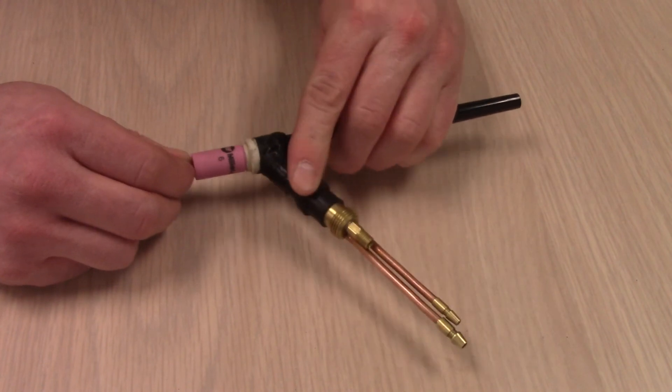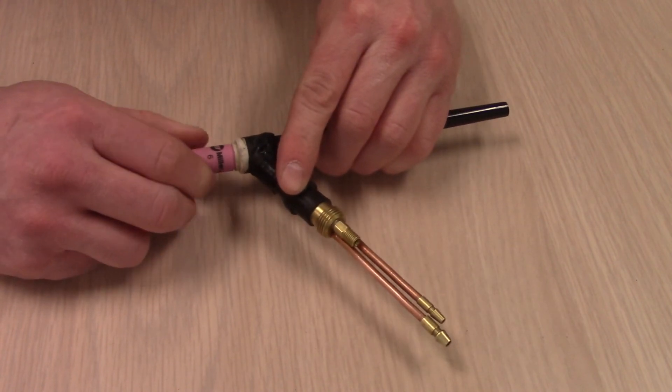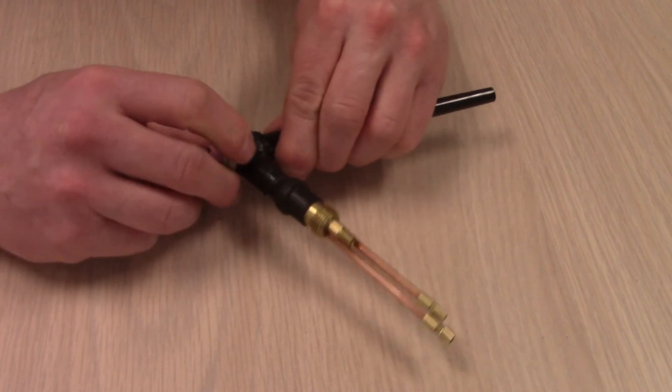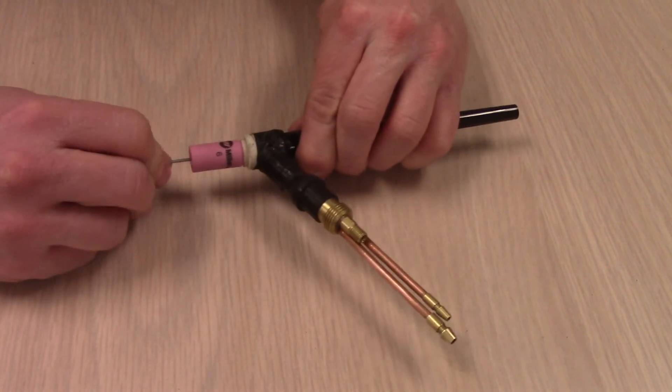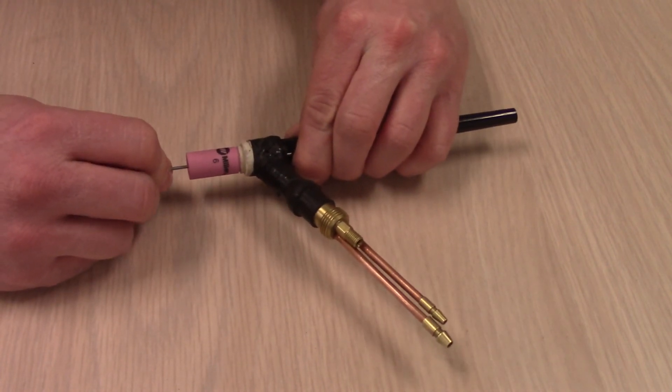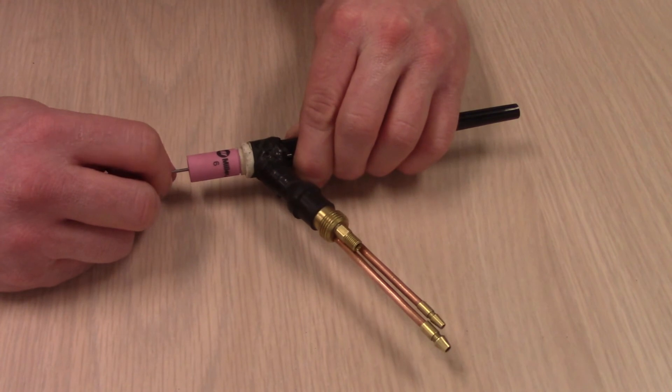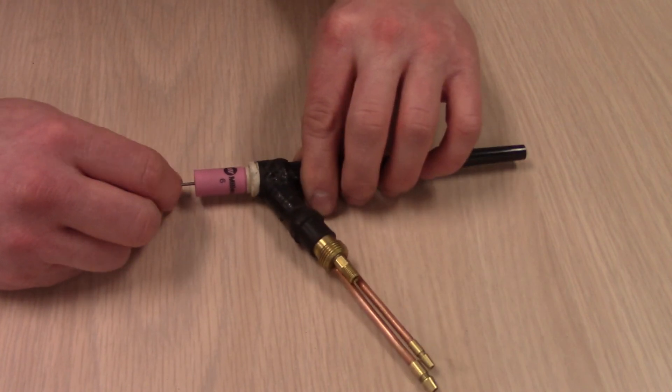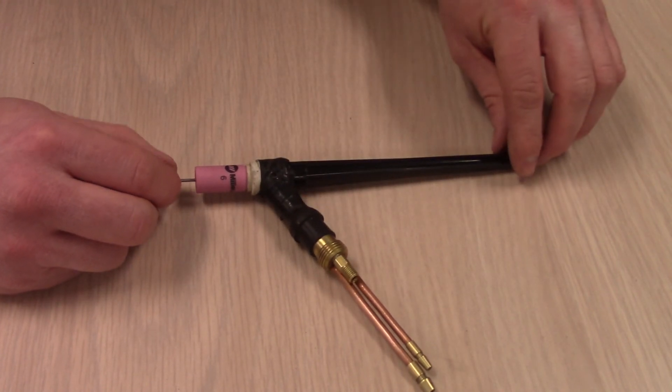The way you know if it's tight or not, if this moves, it's not tight. You got it snugged up there. As long as that's not moving, you know it's tight. So that's how you put the back cap on. Pretty simple. We'll go over what the torches are next week.